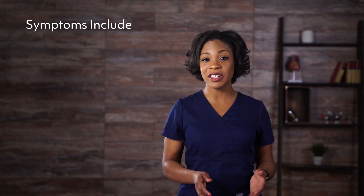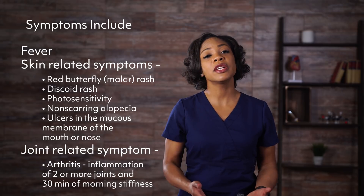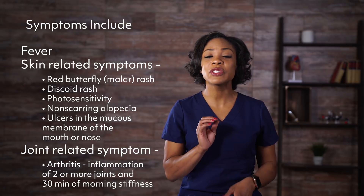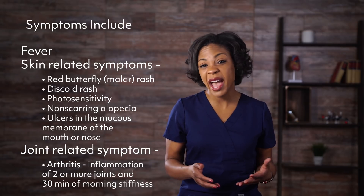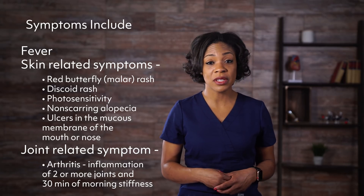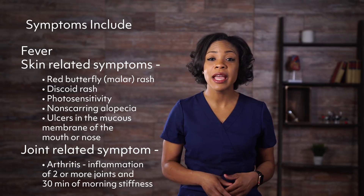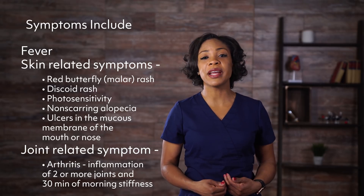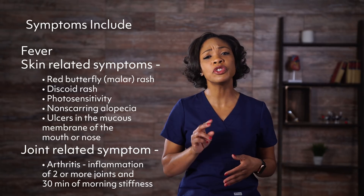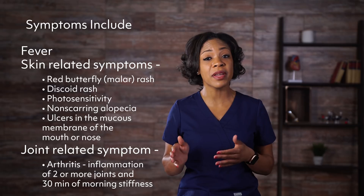The American College of Rheumatology has developed criteria for the diagnosis of SLE, which uses a point system based on the severity of the symptom. Symptoms include fever; skin-related symptoms such as a red butterfly rash, also called malar rash, on the face; a discoid rash, which is a plaque-like red patch that can scar; photosensitivity, which causes other rashes from sun exposure; non-scarring alopecia; and ulcers in the mucous membrane of the mouth or nose. The main joint-related symptom is arthritis or inflammation of two or more joints and 30 minutes of morning stiffness.